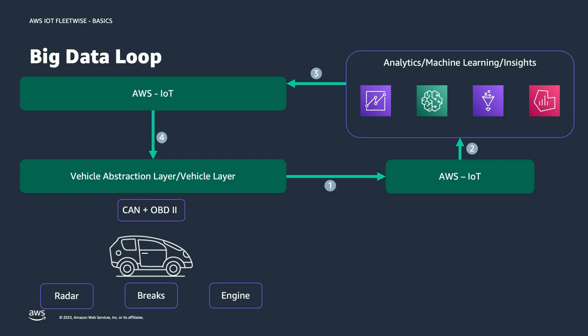Now we're moving to the big data loop, to see how FleetWise can be used in a full system to bring benefit. In the bottom left you'll see the vehicle itself. We have three examples of ECUs: the radar, the brakes, and the engine. These communicate over the CAN bus, leveraging OBD2. On top, we have the vehicle abstraction layer — this is the element where FleetWise brings the most benefit — which allows you to understand and communicate the information observed on the CAN bus.